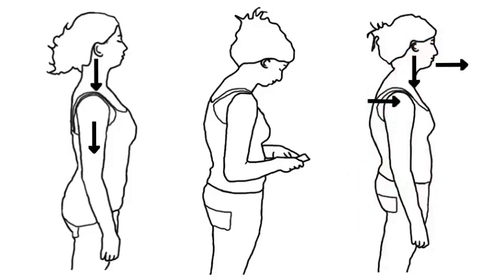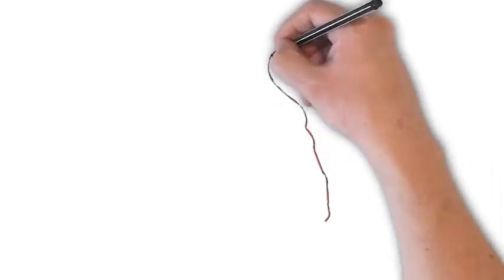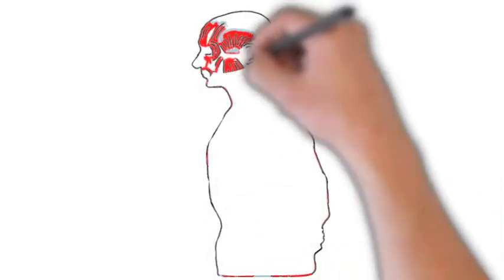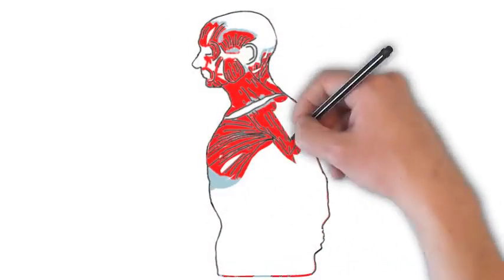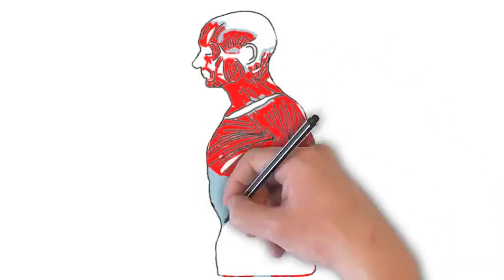For each inch the head moves forward, approximately 10 pounds of extra weight is put on the muscles in the back of the neck. The extra work promotes over-activation in these muscles.